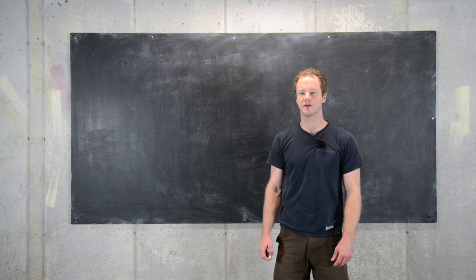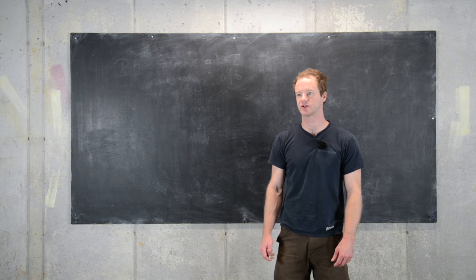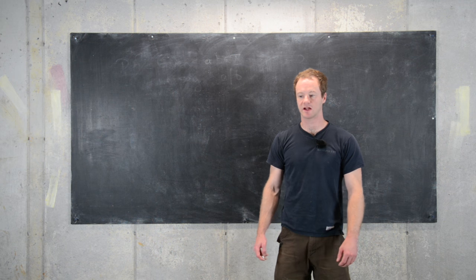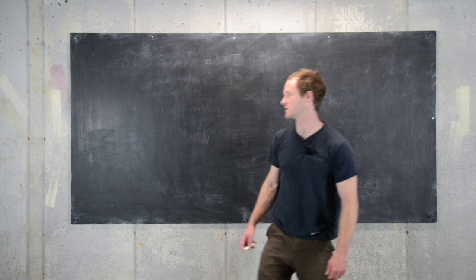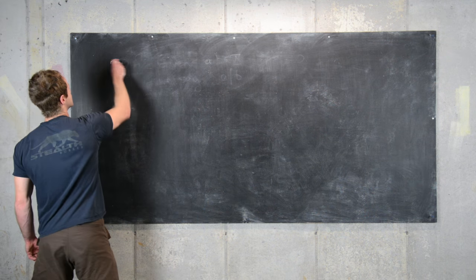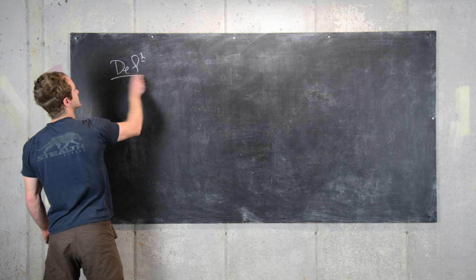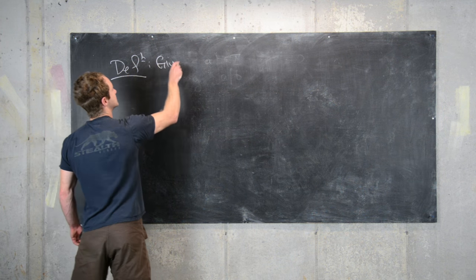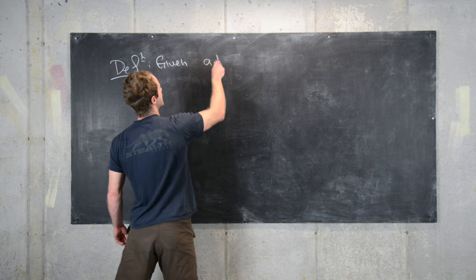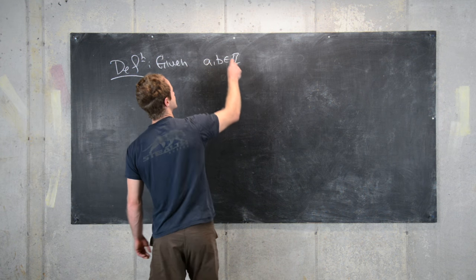In this video we're going to talk about the notion of divisibility within the integers. This is a really important concept for elementary number theory. So the definition is as follows: given a and B integers